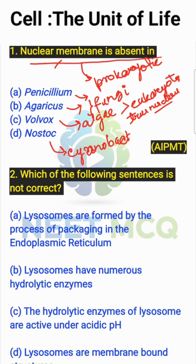Cyanobacteria are also known as blue-green algae, but Nostoc is not a true algae. It is a cyanobacterium, which is a prokaryotic organism. So it lacks a true nucleus, and hence the nuclear membrane is absent. The correct answer is option D.